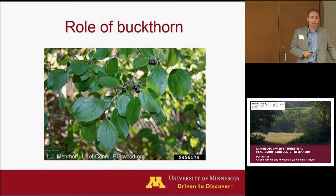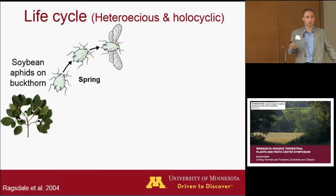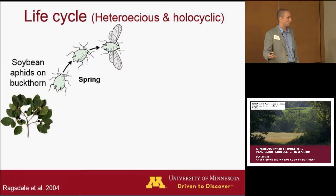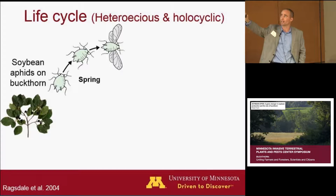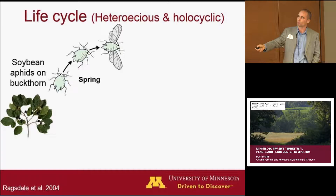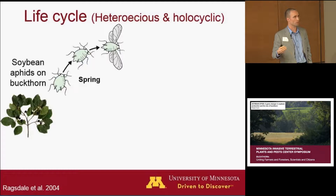Now getting to buckthorn, which I think is the reason you all came here today. What is the role of buckthorn for the soybean aphid? Joe alluded to the fact that it's critical in the life cycle of this pest. This life cycle is way more complicated than something like a butterfly's egg-larva-pupa-adult cycle. The pest overwinters on buckthorn as an egg. Those eggs hatch, and you'll get a few generations of wingless females produced on those plants — just females, reproducing without mating, and their babies are born pregnant. These things are reproducing machines.